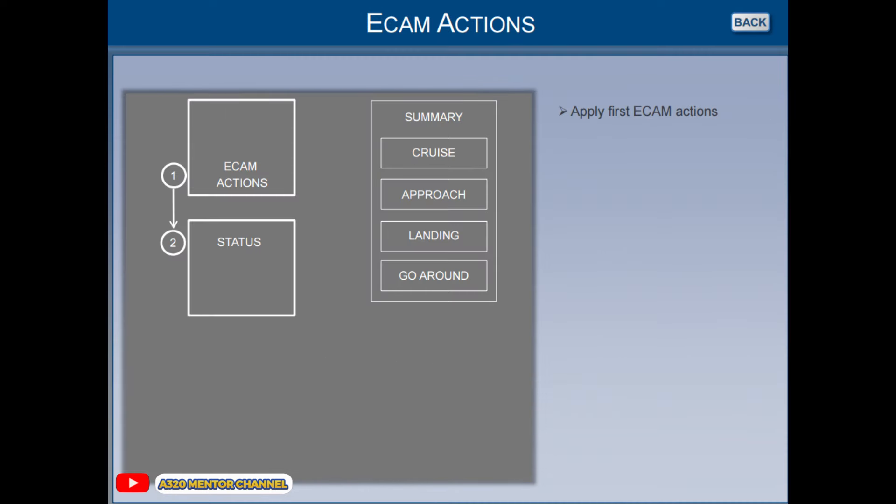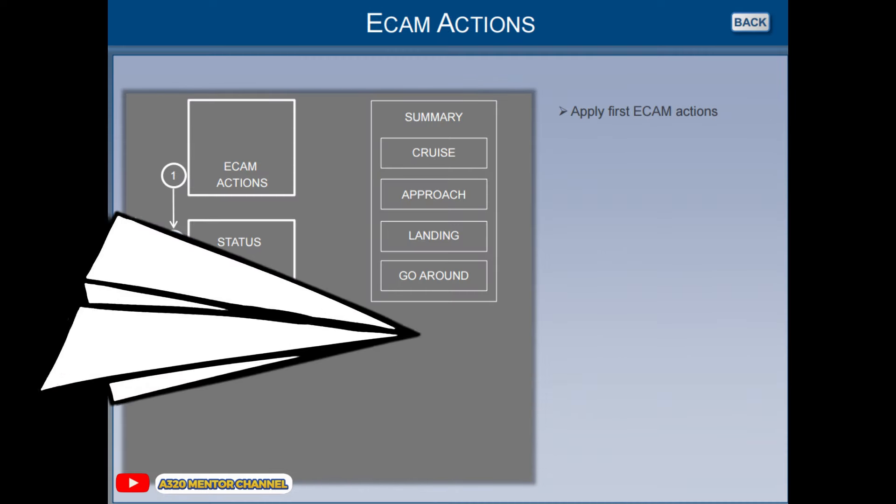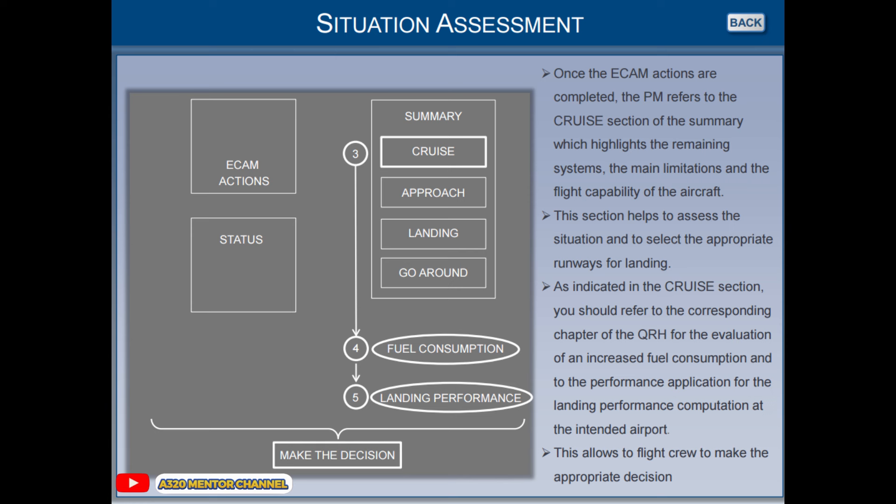Apply first ECAM actions. Once the ECAM actions are completed, the pilot monitor refers to the cruise section of the summary, which highlights the remaining systems, the main limitations, and the flight capability of the aircraft. This section helps to assess the situation and to select the appropriate runways for landing.